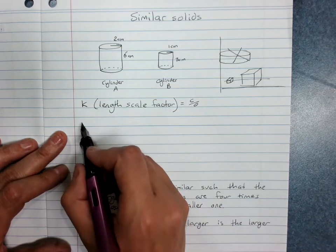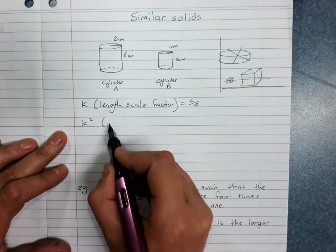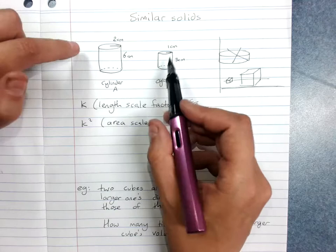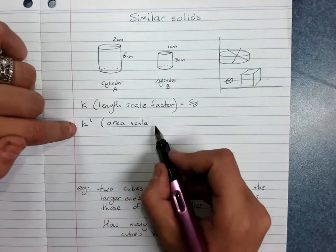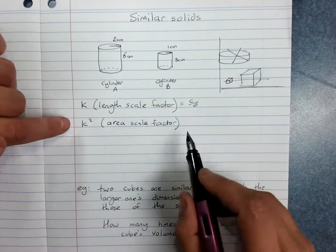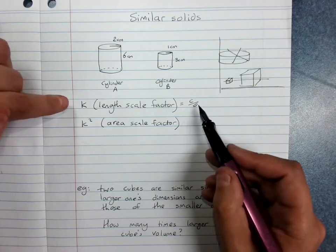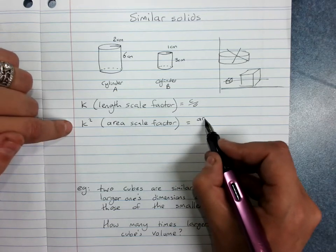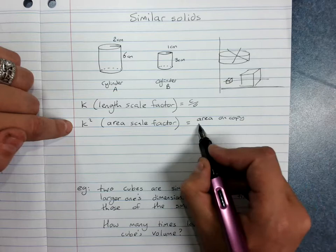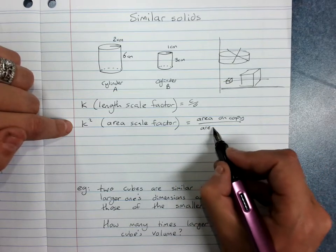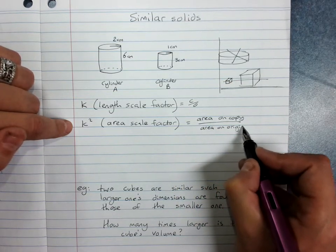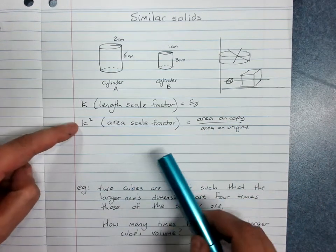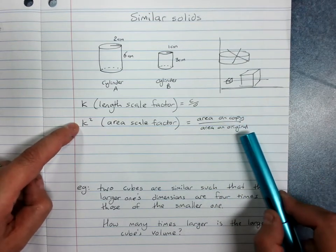The area scale factor is k squared. So the area of these circles would scale to k squared. And you can get that either by finding k and squaring it, or by taking area on copy divided by the matching area on the original.